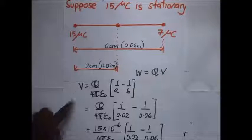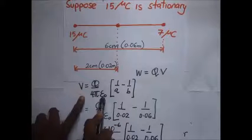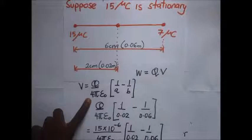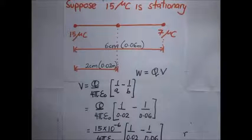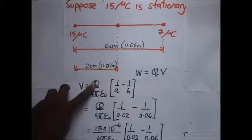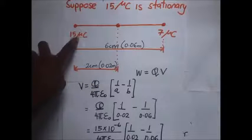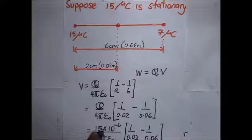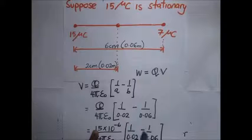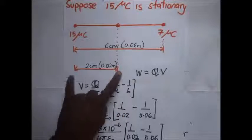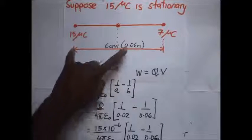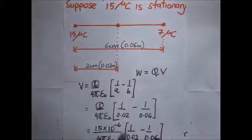To summarize: V equals q over 4πε₀ into (1/a − 1/b). This is the expression for potential difference derived in our previous tutorial. Our value of q is the stationary charge we have chosen, which is 15 microcoulombs. Substituting: 15 microcoulombs into (1/0.02 − 1/0.06), where 0.02 is the shorter distance a and 0.06 is the longer distance b.